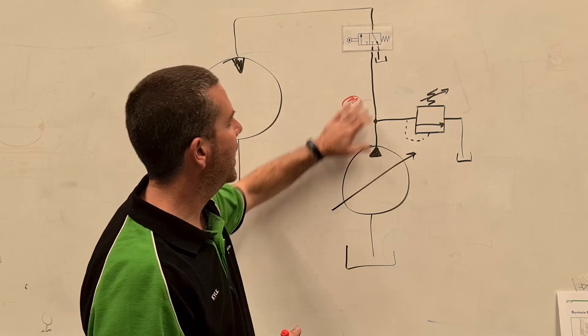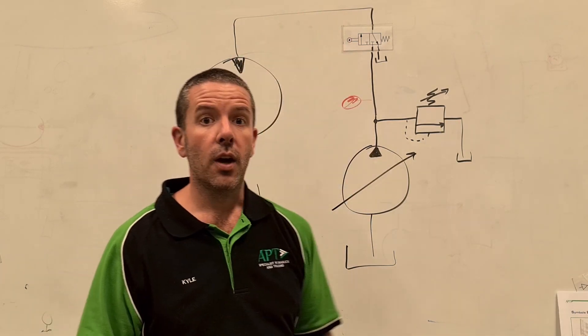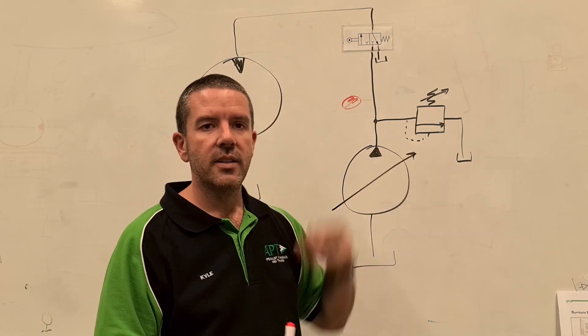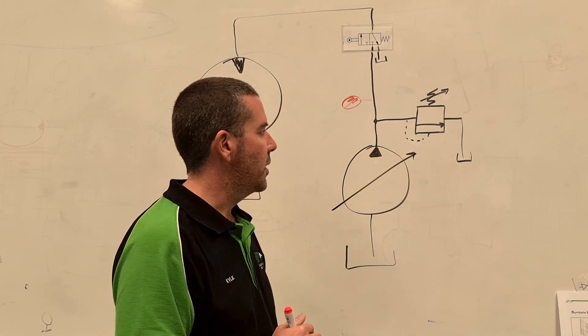And then we've got our lines, so solid lines are flow lines and dotted lines are pilot or signal lines. That's the easiest way to remember it.